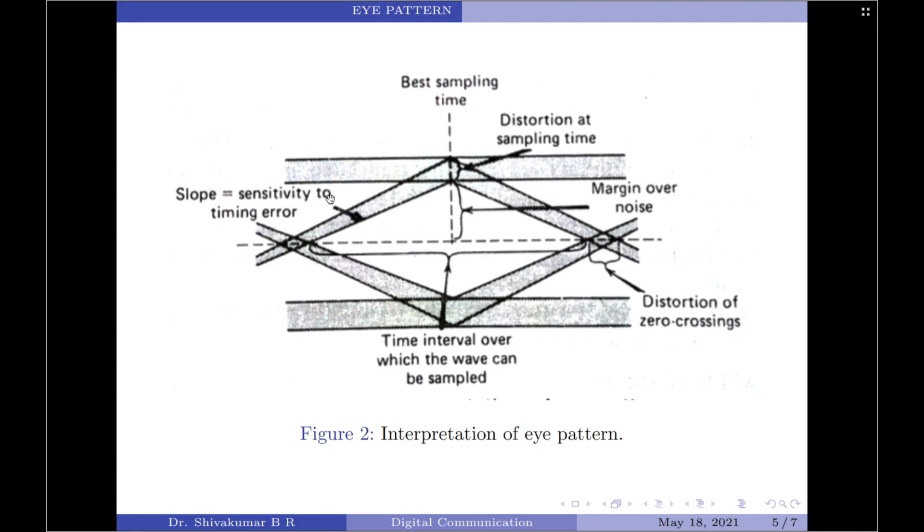So the slope indicates the sensitivity to the timing errors. Further, the height of the eye opening at a specified sampling time will define its margin over noise. So the best margin over noise is always produced at the best sampling time, which in fact is the time instant at which the eye is open its widest.